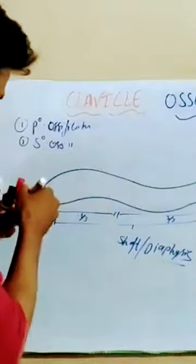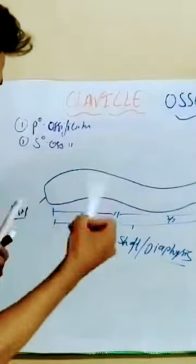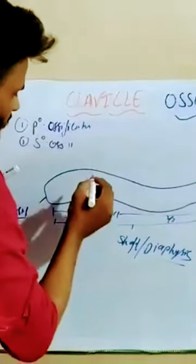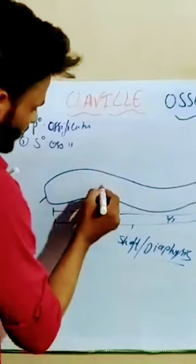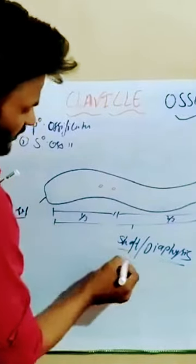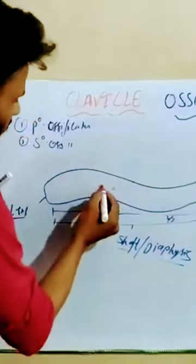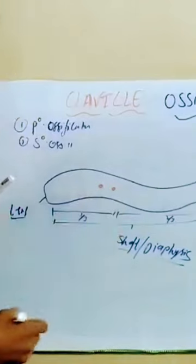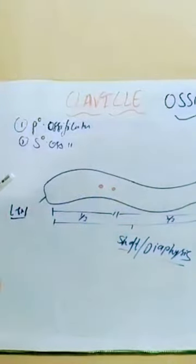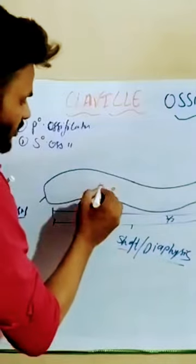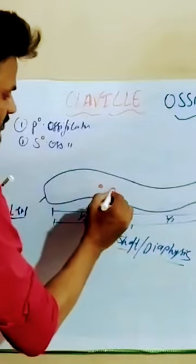Primary ossification centers are present on the shaft or diaphysis. Clavicle is the only long bone where it has two primary centers of ossification.